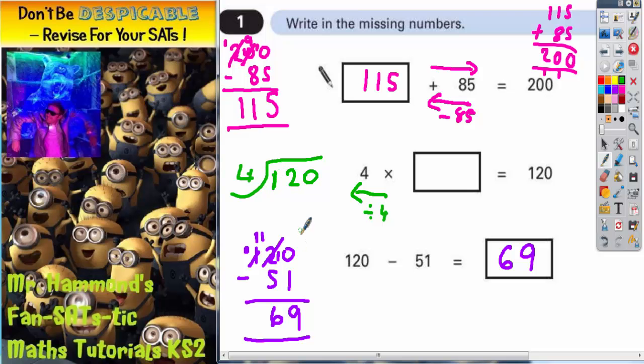Now the easiest way to do this would be to do it in your head because dividing by 4 is easy. Just half it and half it again. Half of 120 is 60. Half it again is 30. So it looks like the answer should be 30.